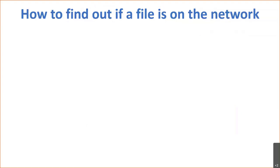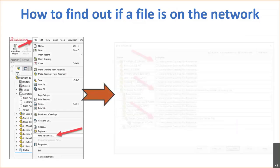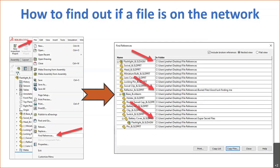How do you find out if files in your assembly are on the network drive and not on your local drive? From inside SOLIDWORKS, click the File drop-down menu and click Find References. It pulls up a window showing all file references for part and sub-assembly files inside your top-level assembly, including which drive they're located on — so if something is on an N drive or E drive instead of the C drive, it immediately shows up.